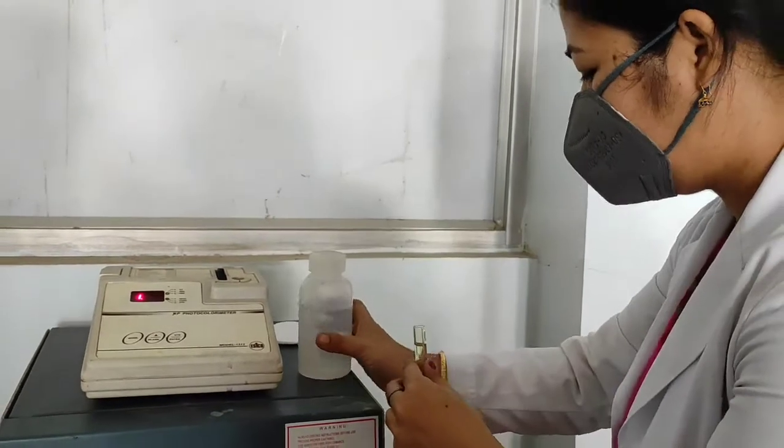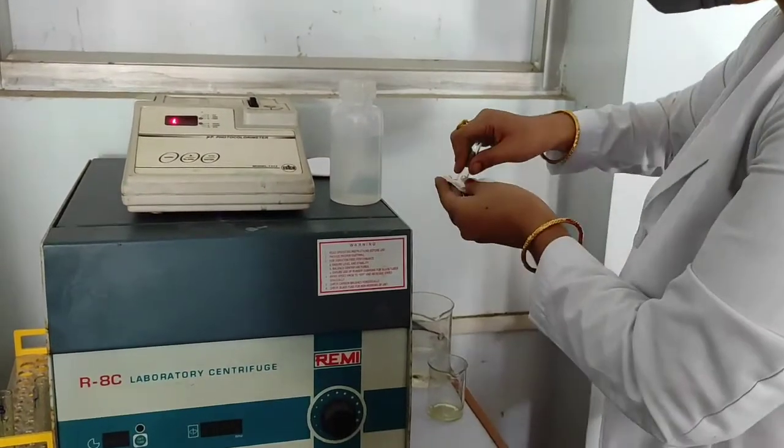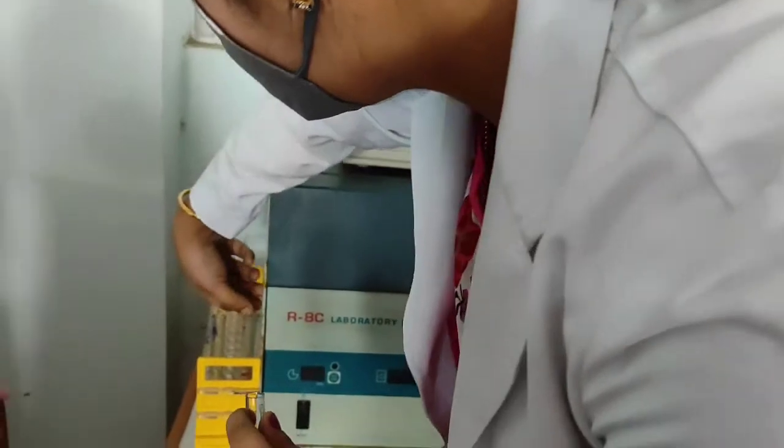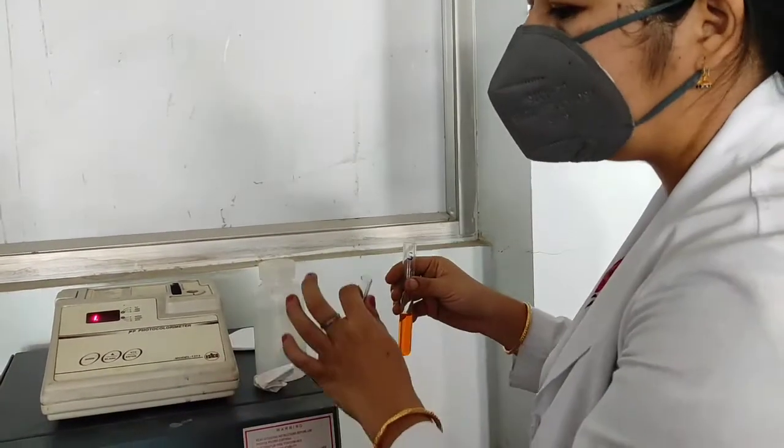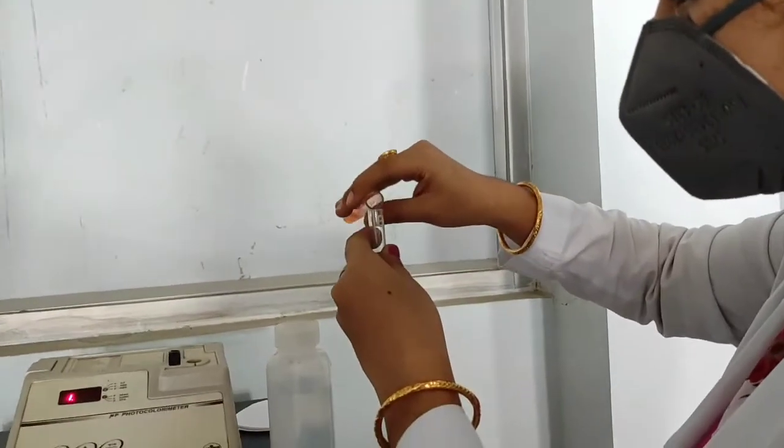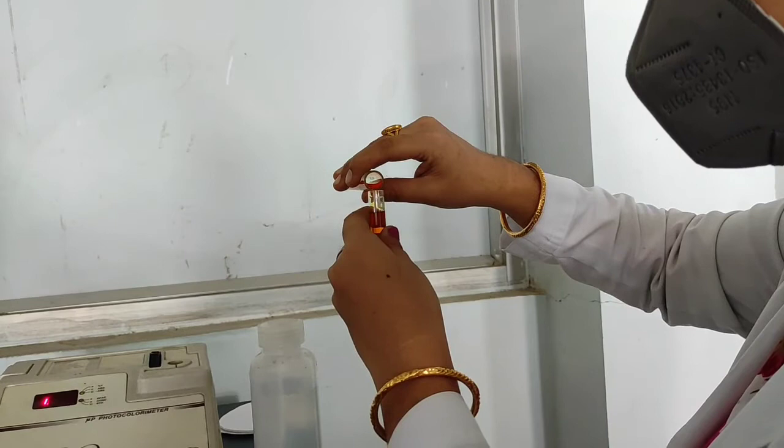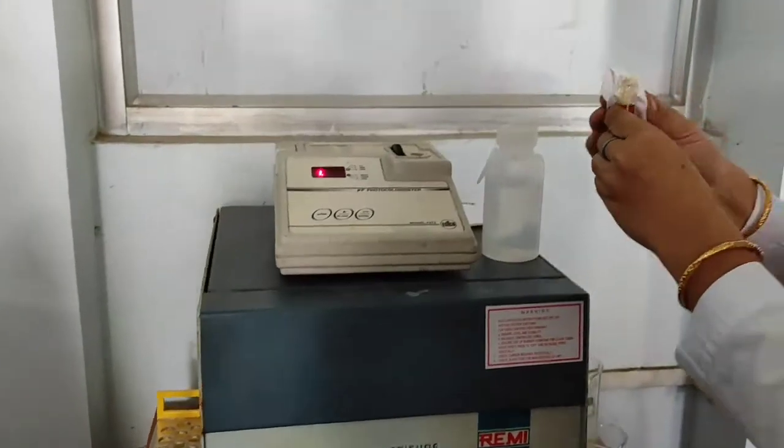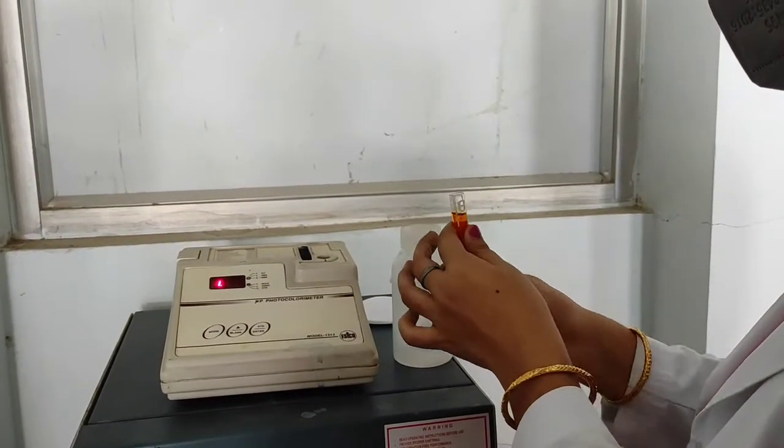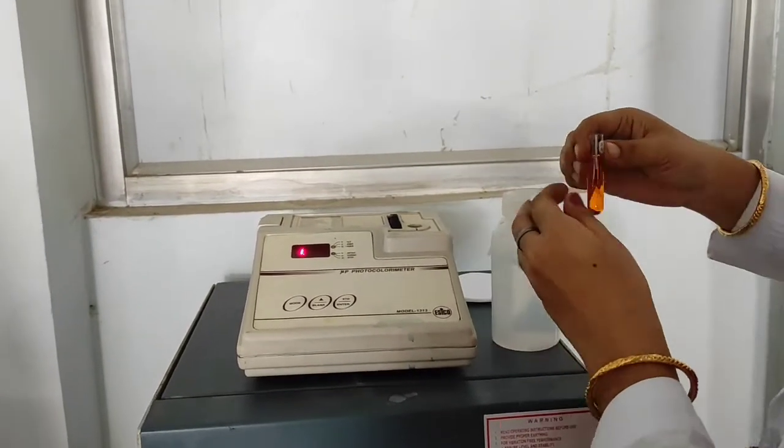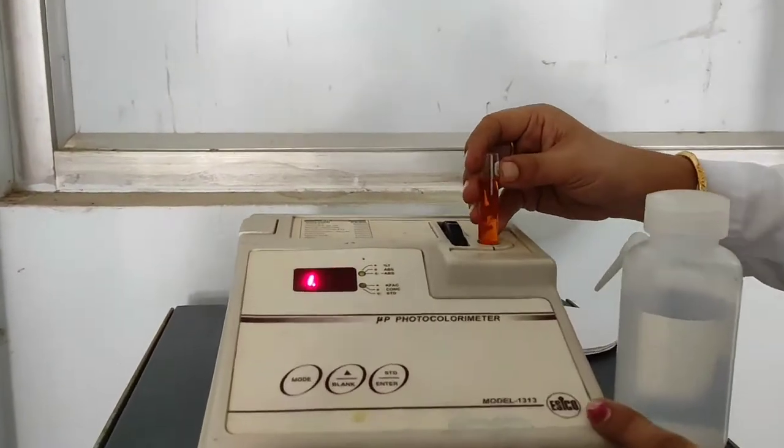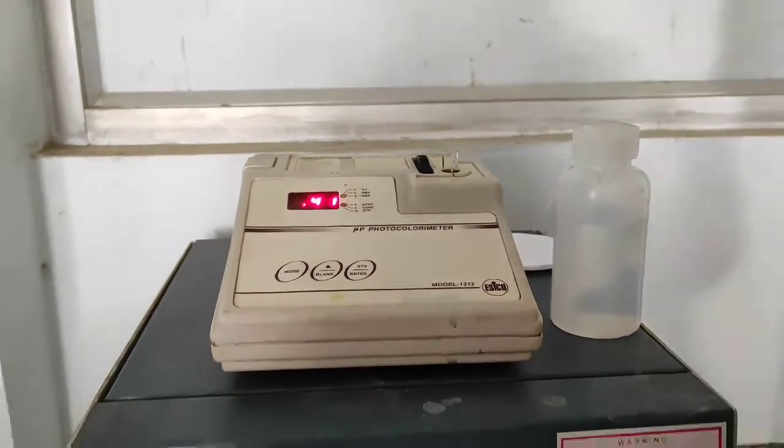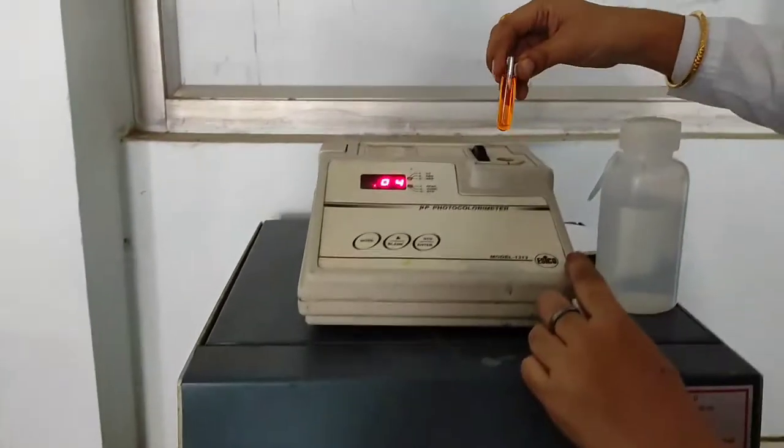The next one is the standard. The sequence would be blank, standard, and then test. This is it. 0.41, the optical density of the standard.